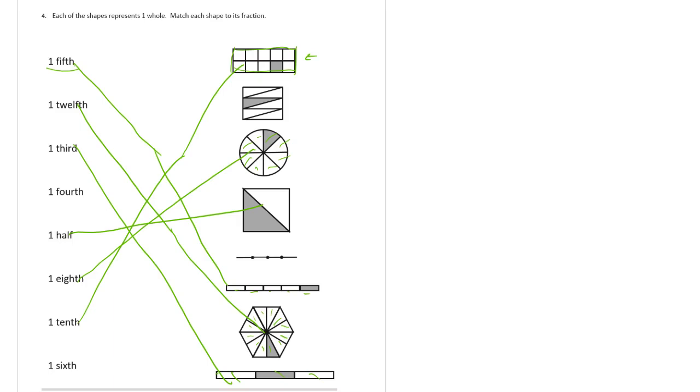And this here. This line is in fourths, right? Because it's one, two, three, four pieces. Don't be fooled by the dots that separate the segments. There's four pieces to that line. So that's one fourth.